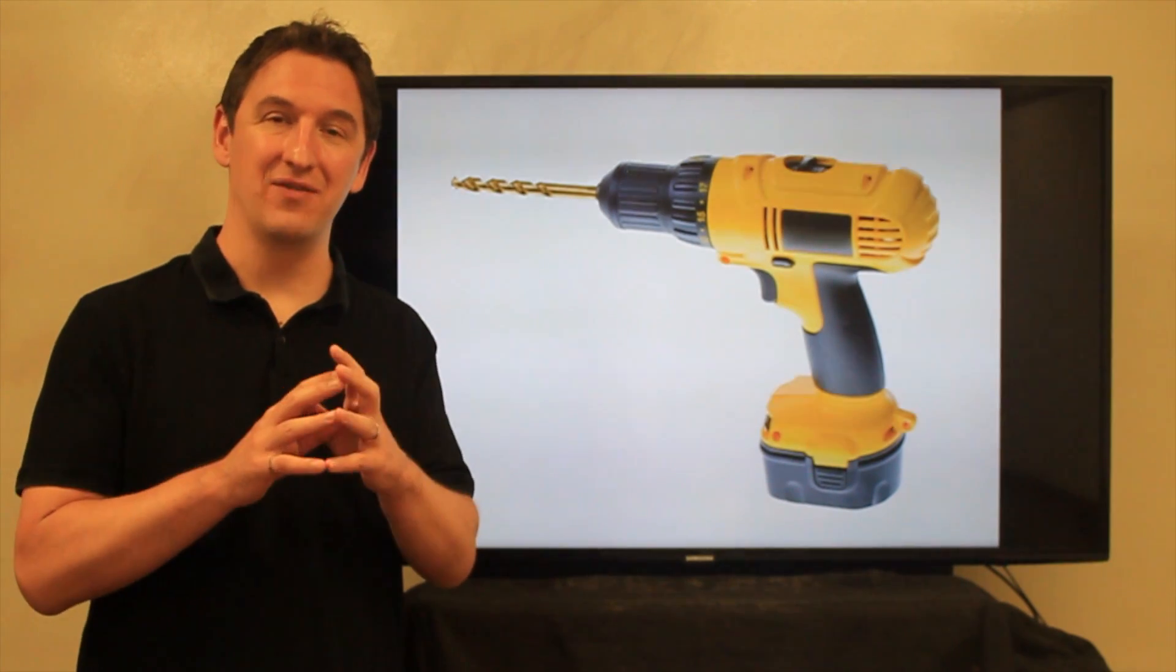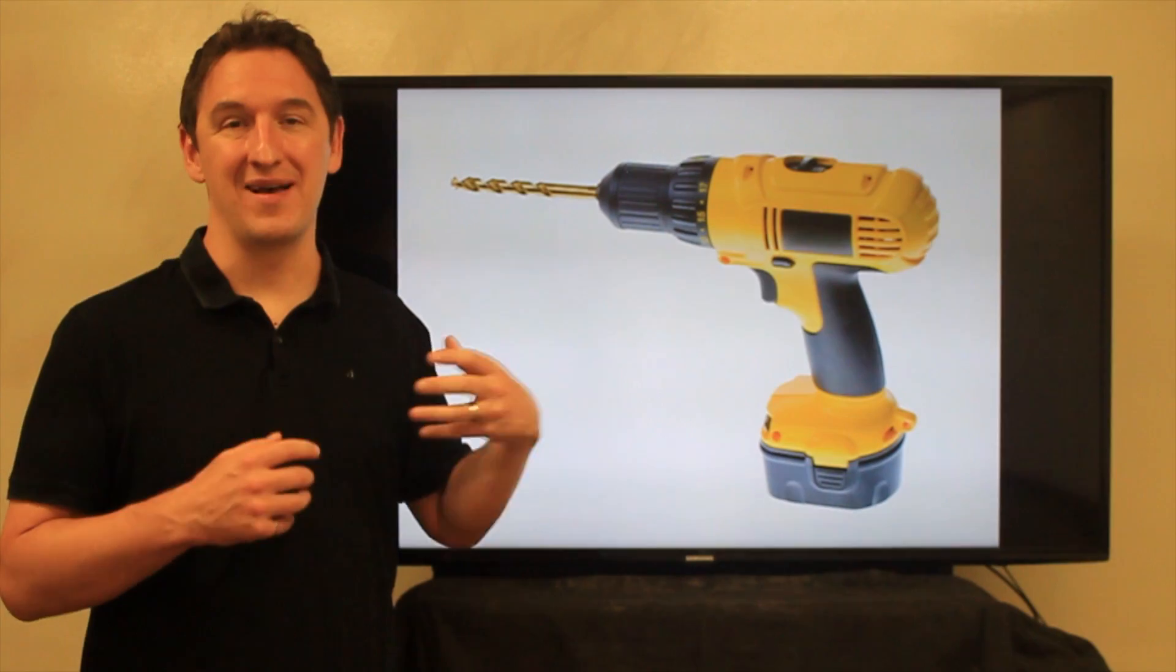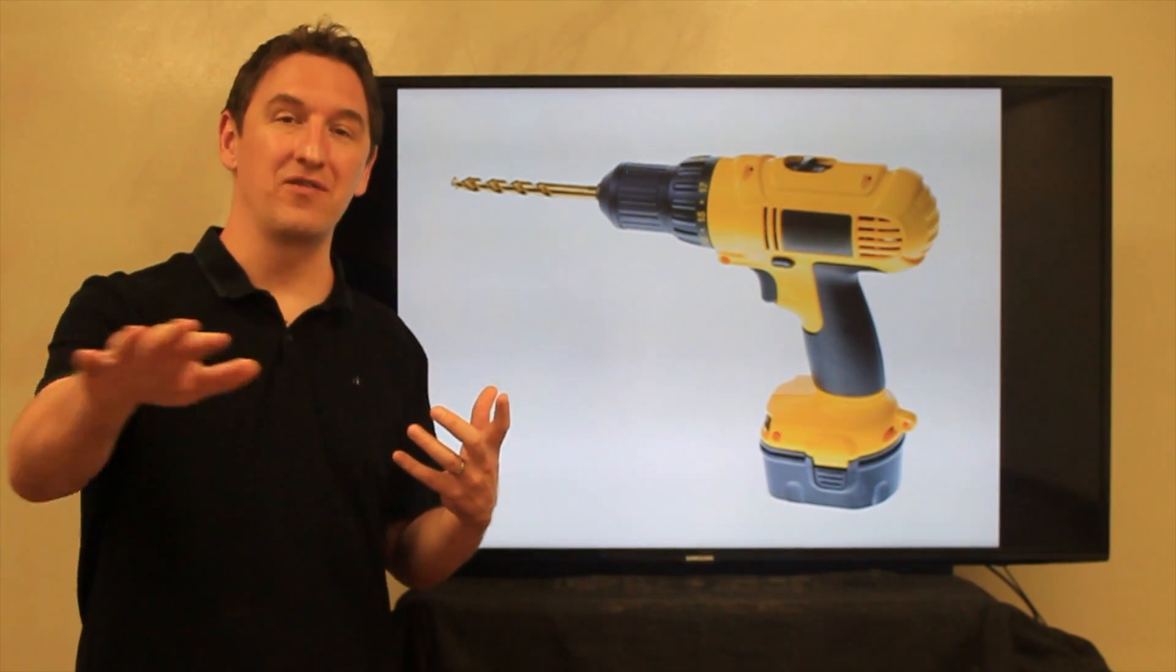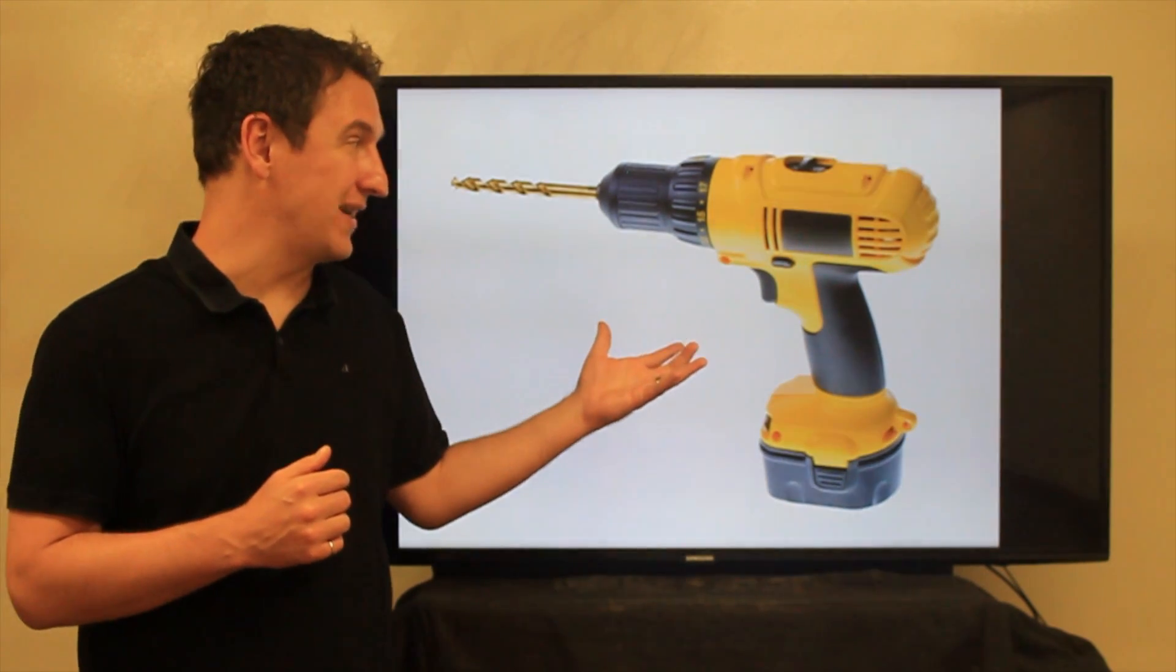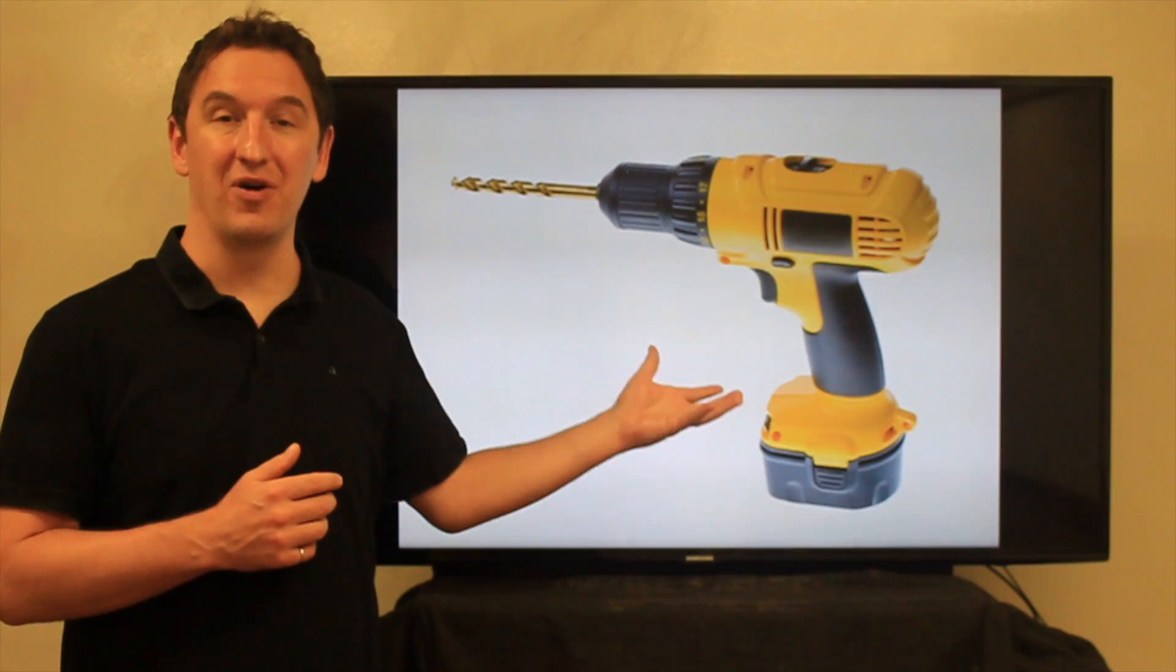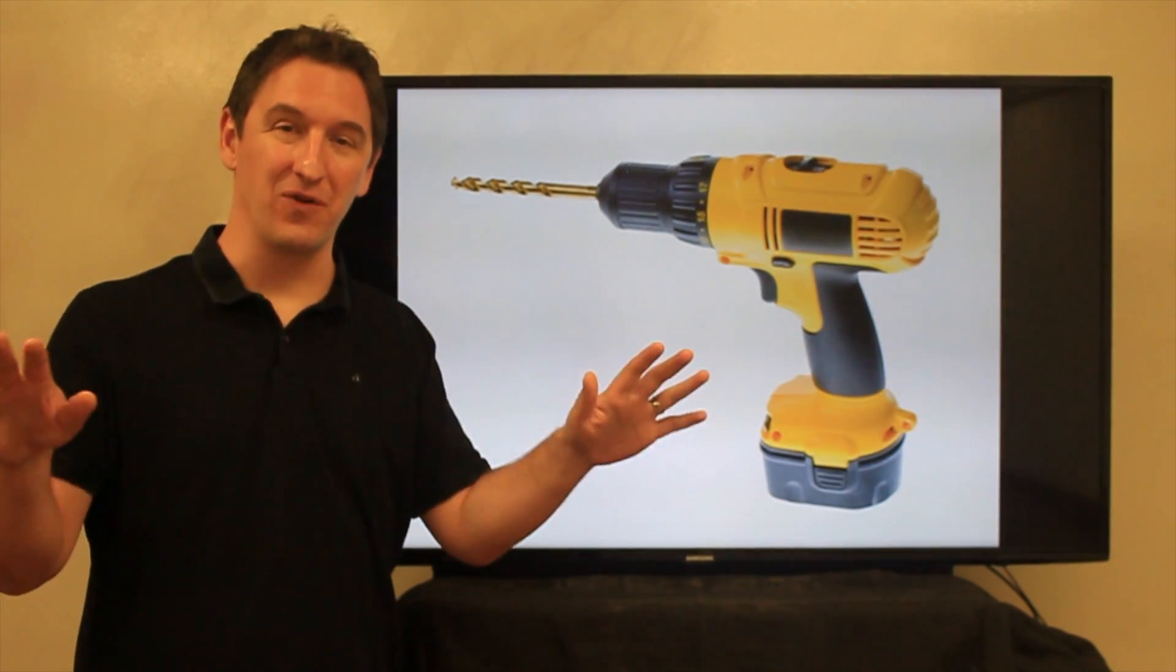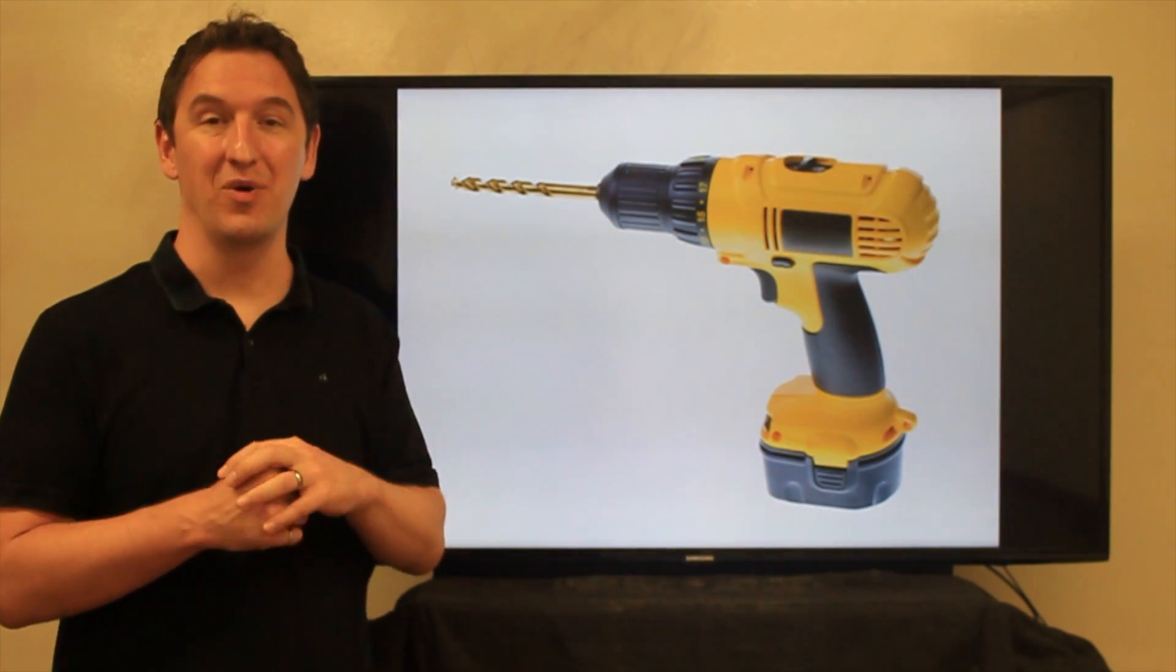Famously, this executive training program begins with this slide, which is a picture of their most famous or biggest product. They would have all the assembled executives in a room, and they would ask this question to start out the training. They would say, could you please confirm that this is in fact what our company sells? And there would be an awkward sort of silence, and eventually someone would put up their hand and say, yes, that's a picture of what we sell.